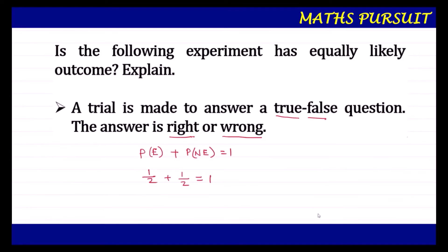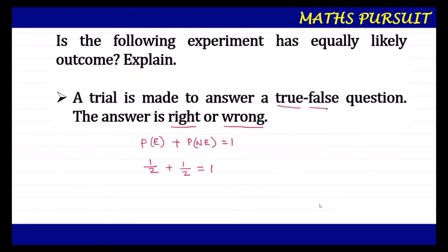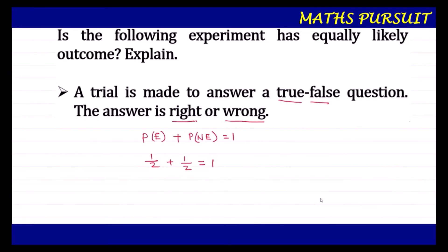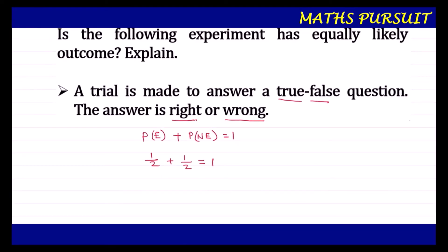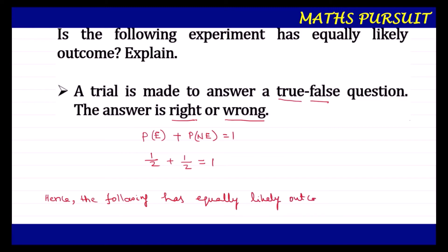So at the end, we can definitely say that the question is asking us whether the following experiment has equally likely outcome. Hence, the following experiment has equally likely outcome. Whenever there are two outcomes, then definitely that particular experiment will have equally likely outcome.